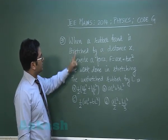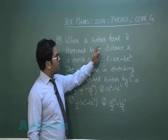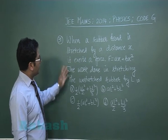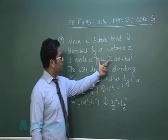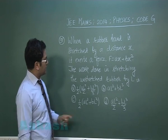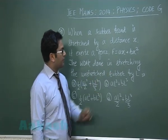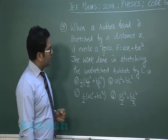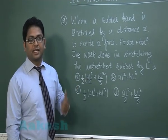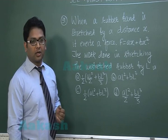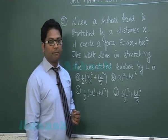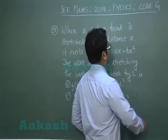Question 31 says: when a rubber band is stretched by a distance x, it exerts a force f = ax + bx². The question asks for the work done in stretching the unstretched rubber by L. This question is from Work, Energy and Power — more precisely, we need to calculate work done in one dimension.